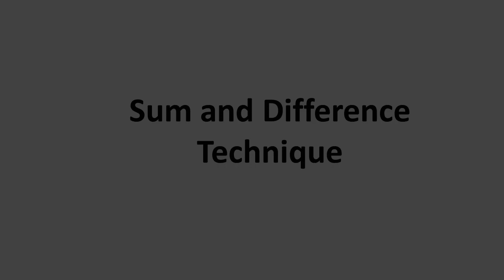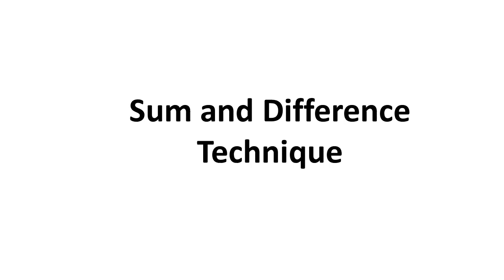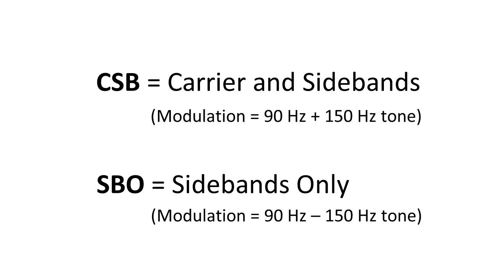First, the sum and difference technique — this concept is also used for example in analogue stereo broadcasting on FM transmissions, also developed mid 20th century. Here we'll consider just the modulating tones on the two signals: 90 and 150 Hz sine wave tones. The CSB signal is modulated by the 90 and 150 Hz tones added together. The SBO signal is modulated by the 90 Hz tone added to the antiphase 150 Hz — that is, the 150 Hz signal is inverted or shifted in phase by 180 degrees.